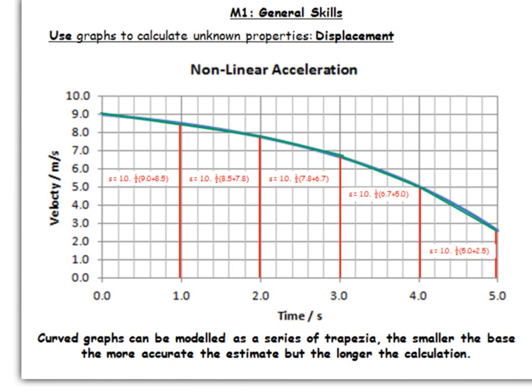And that gives you the area of this trapezium here. So if you want to get the total area, we just have to add together the areas of all of these individual trapezia. And that allows us to calculate an approximation for the displacement in this case.